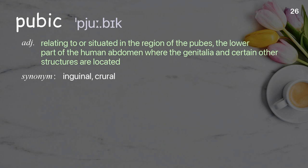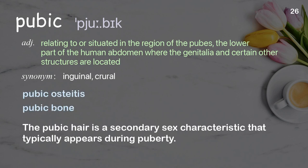Pubic: relating to or situated in the region of the pubes, the lower part of the human abdomen where the genitalia and certain other structures are located. Examples: The pubic hair is a secondary sex characteristic that typically appears during puberty.